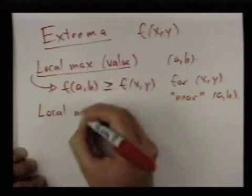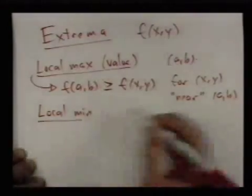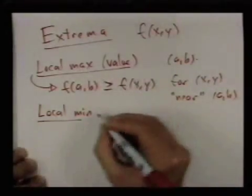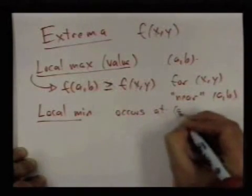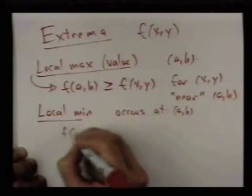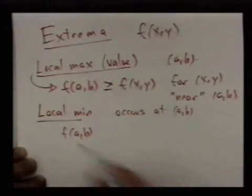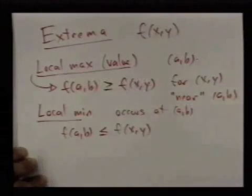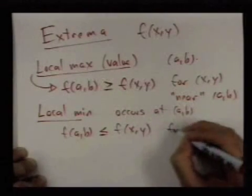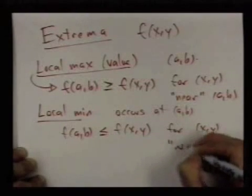We also have a concept of a local min. A local min occurs at (a,b) if the function's value at that point is less than or equal to the values of the function for (x,y) near (a,b).